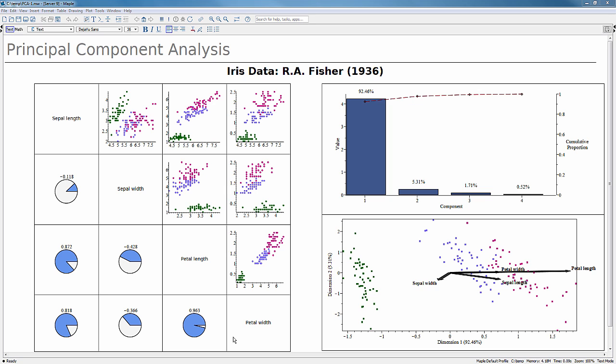The iris dataset contains measurements in centimeters for four variables from three species of iris from a sample of 150 flowers. The data was collected over several years by Edgar Anderson, who used the data to show that measurements could be used to differentiate between different species of irises.